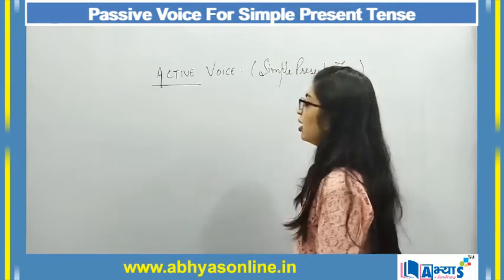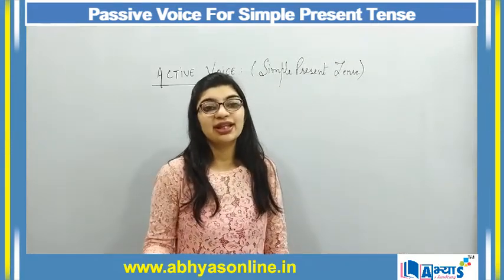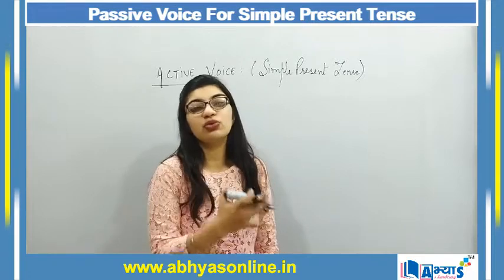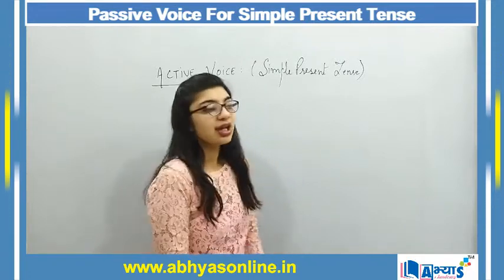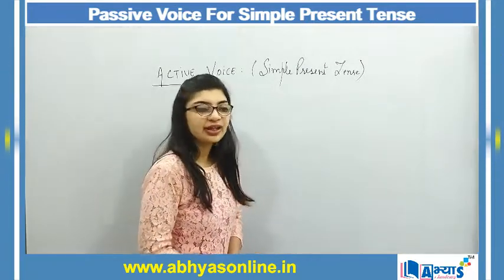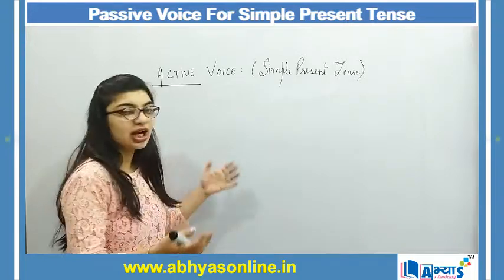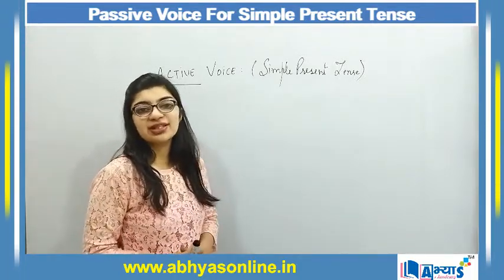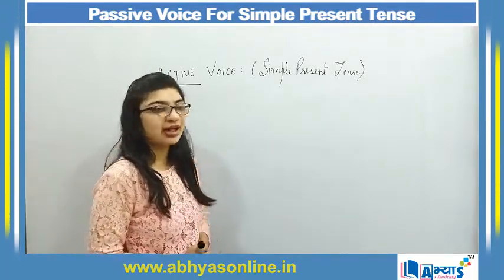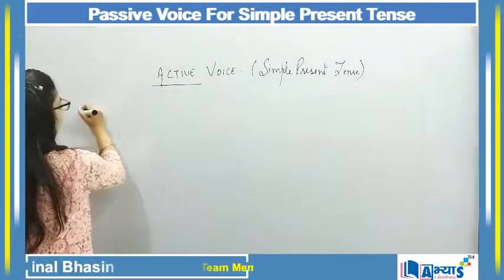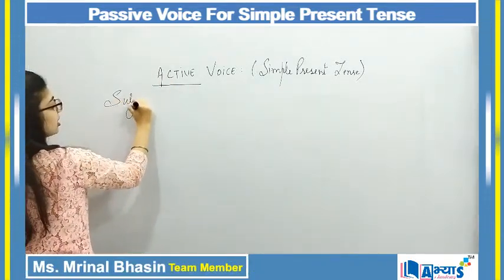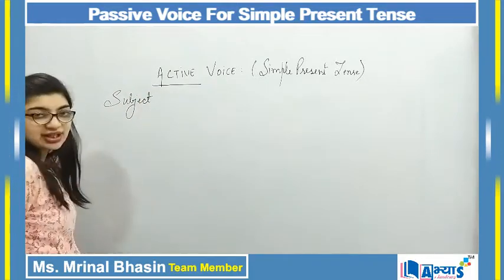What is active voice? When we talk about future tense, past tense, or present perfect tense, then the rules will change. The rule is to identify if our sentence is active or if it is in simple present tense. The rule is that if we consider our sentence, we will start with the subject.